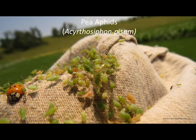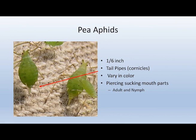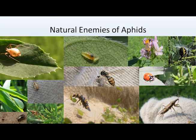Our next pest is pea aphids. Pea aphids are about one-sixteenth of an inch. Use a hand lens to see the small tail pipes called cornicles coming off the back end — a giveaway that it is a species of aphid. They are larger than many other aphids and vary in color. They have piercing-sucking mouthparts; they insert them into the phloem, suck out the sugars, and replace it with their saliva. Pea aphids are a minor to moderate pest of alfalfa in the northeast. Two other aphids that attack alfalfa are the blue alfalfa aphid and the spotted alfalfa aphid.